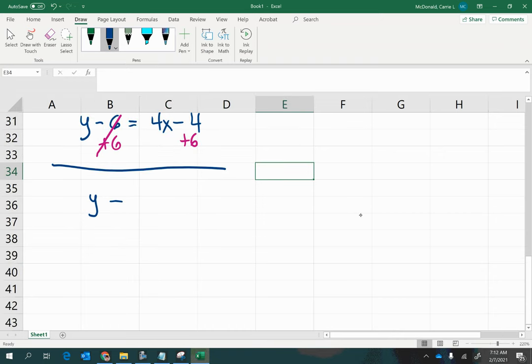Zero this out, bring down the y, bring down the 4x, combine like terms here, negative 4 plus 6 is positive 2. So that would be the answer in slope-intercept form.